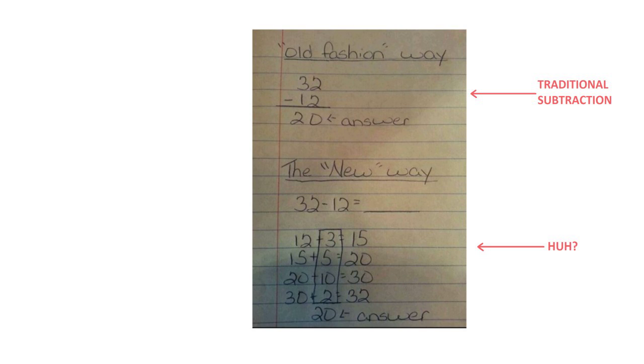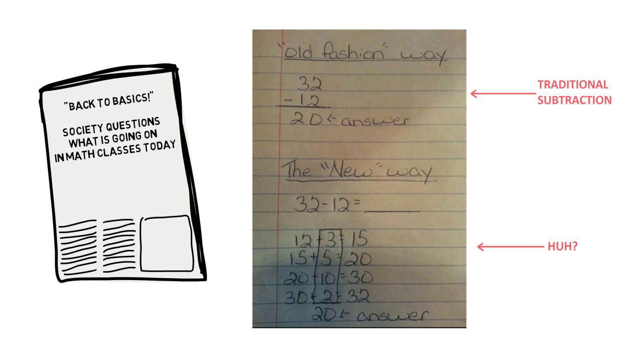One can only look at this page and say egad. I agree. 32 take away 12 is just 20 after all. We see the familiar traditional algorithm in this image. The images are called to go back to the traditional ways, but we as adults have to be really clear as to what we want for our kids, what learning really means.